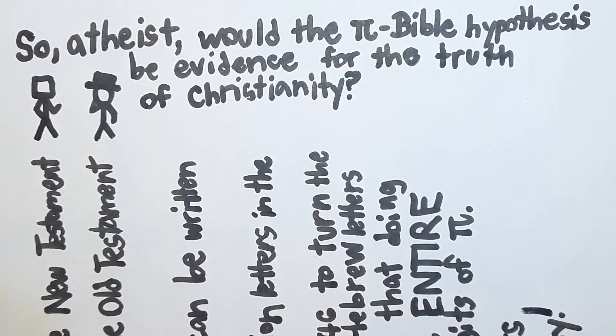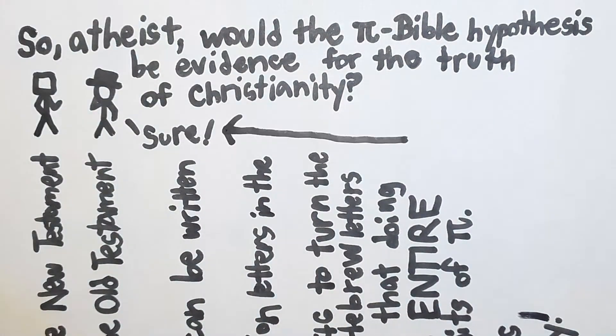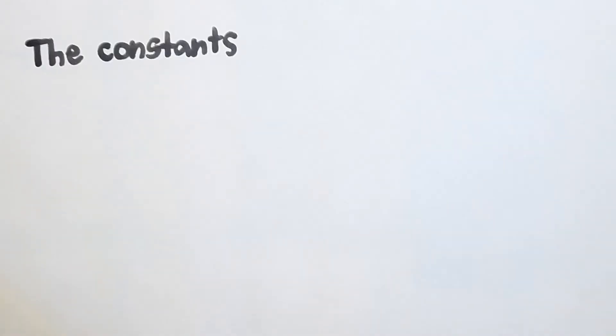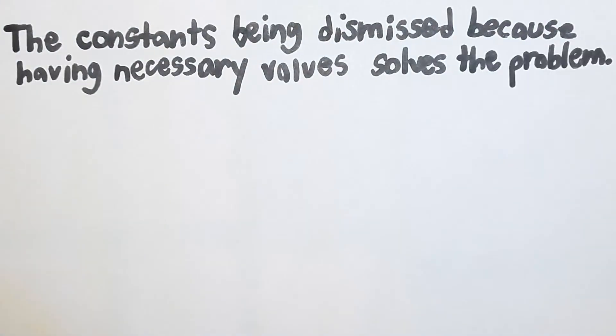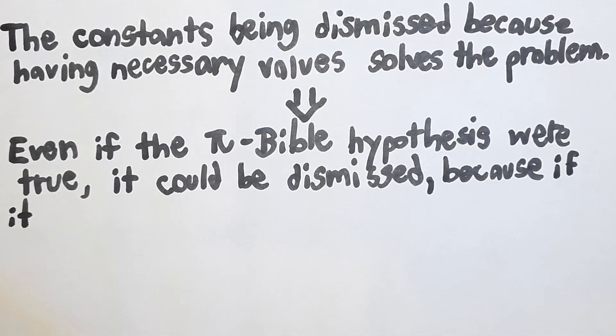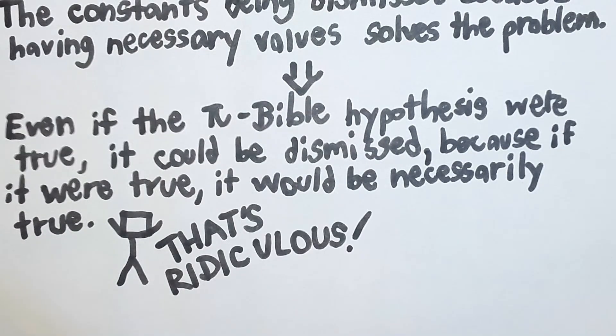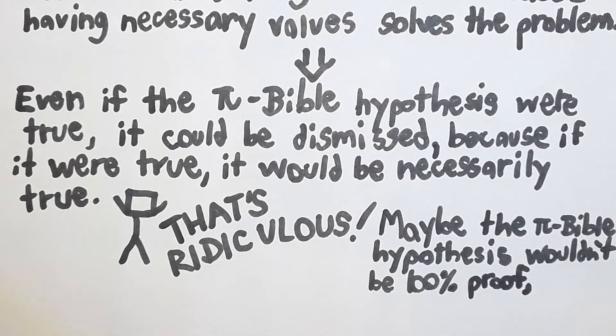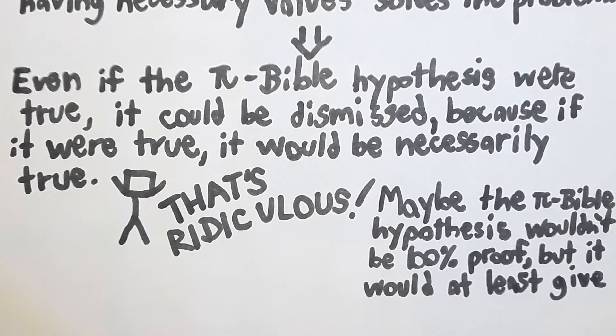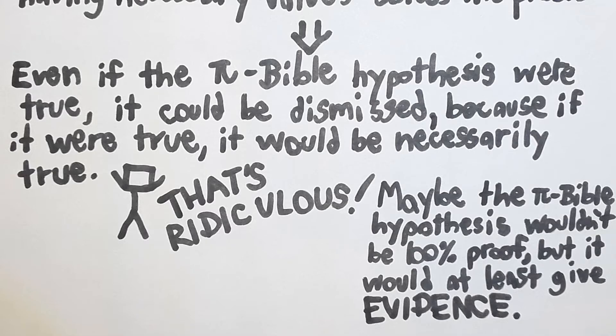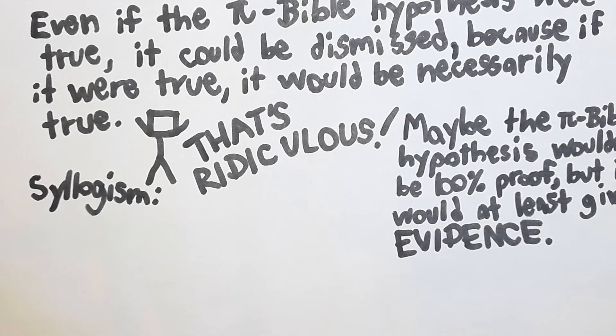If it were true, would that count as at least a bit of evidence that Christianity were true? The atheists would probably want to say yes, but that's inconsistent. Remember, if we can dismiss the fine-tuning of the universe on the basis that the constants have their values necessarily, then we could dismiss the Pi Bible hypothesis because if it were true, it would be necessarily true. But that's ridiculous. Christianity would obviously be more plausible if the Pi Bible hypothesis turned out to be true. Maybe the Pi Bible hypothesis wouldn't be a knock-down argument for the truth of Christianity, but it would at least be some evidence.